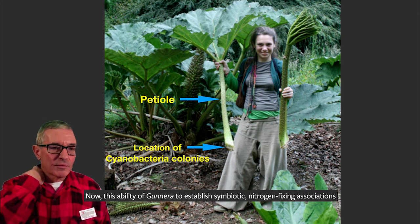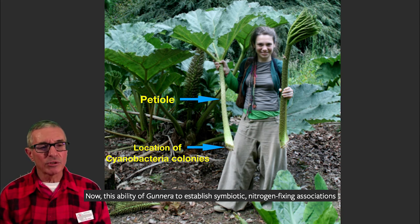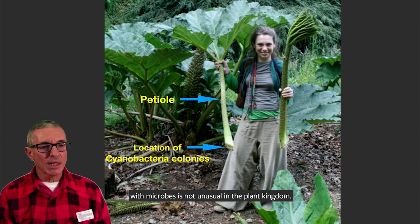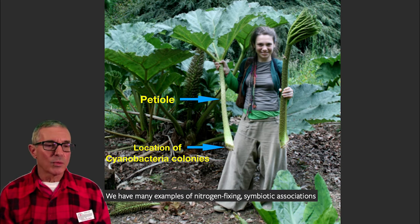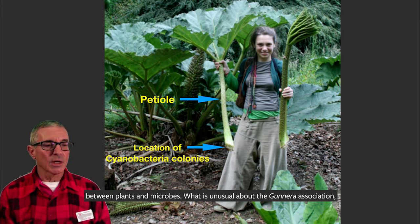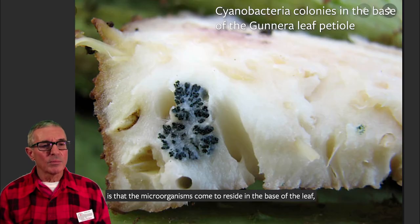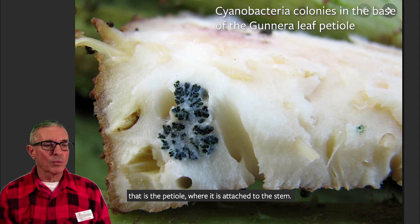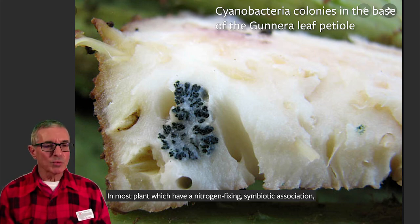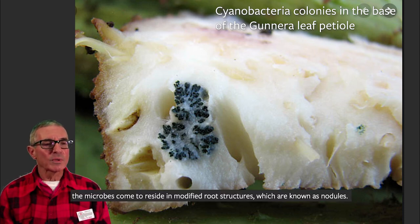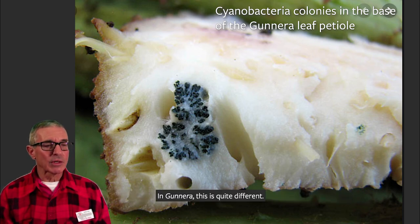This ability of gunnera to establish symbiotic nitrogen-fixing associations with microbes is not unusual in the plant kingdom. We have many examples of nitrogen-fixing symbiotic associations between plants and microbes. What is unusual about the gunnera association is that the microorganisms come to reside in the base of the leaf — that is, the petiole, where it is attached to the stem. In most plants with a nitrogen-fixing symbiotic association, the microbes come to reside in modified root structures known as nodules. In gunnera, this is quite different.